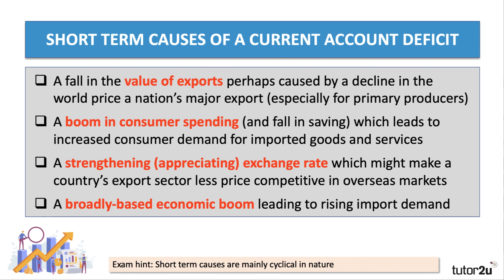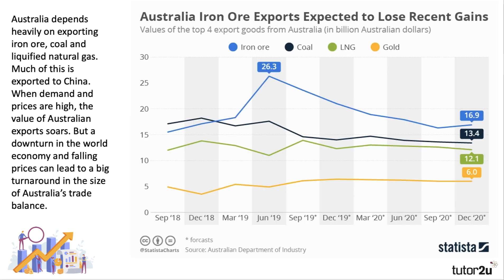Not all the causes of a deficit on the trade balance are necessarily the result of a poorly performing economy. Often during a cyclical boom the trade deficit will get worse. Australia is a good example — their export patterns are such that they depend heavily on trade with China, exporting liquefied natural gas, coal, and iron ore. When the Chinese economy is doing well and demand in China is rising, that tends to drive world prices of these things up and Australian export industries do particularly well. However, when the world economy or China slows down, Australian exports of these things tend to fall and their trade balance worsens as a result.